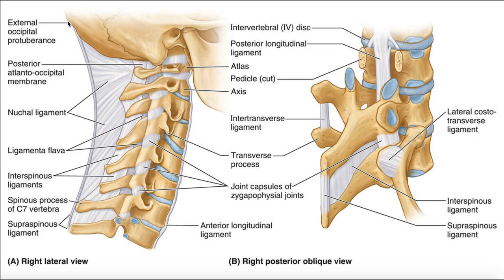If we follow from the external occipital protuberance along the base of the skull, it leads us to this structure right here — this is the mastoid process. Now, the mastoid process looks like it's articulating with the atlas right here, but actually the atlas articulates with a bone of the skull that's more medial. You can't see it because of the mastoid process, but medial to this we would actually have the occipital condyle. It's actually the occipital condyle that articulates with the atlas.